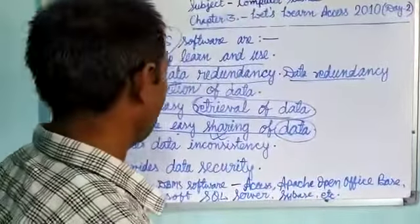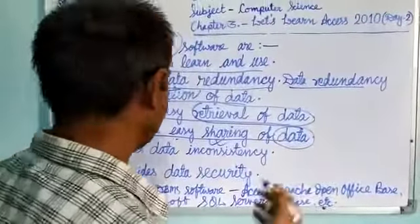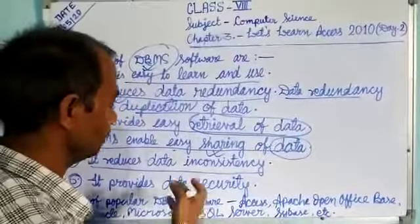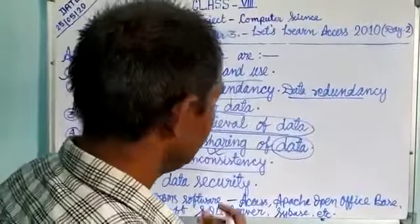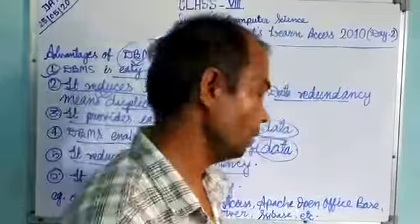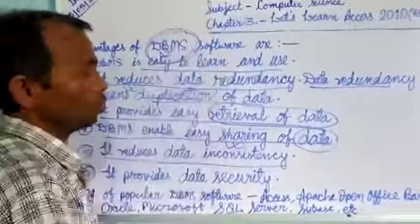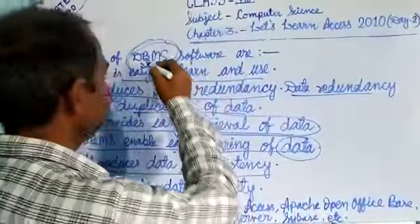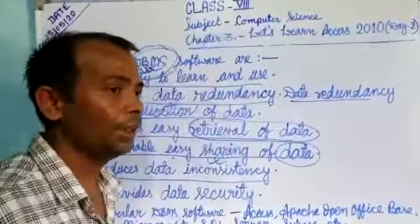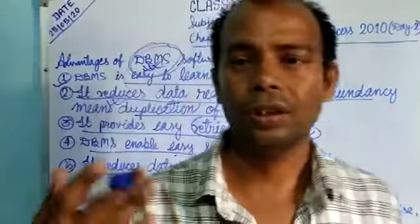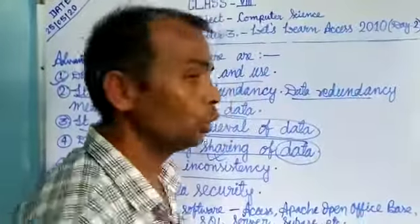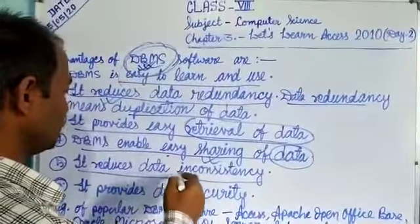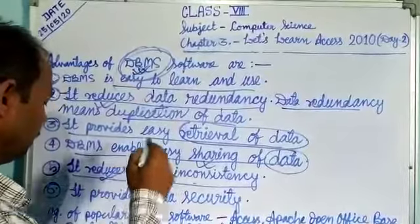DBMS reduces data inconsistency. Since we have one central file, any change we need to make is done in that central file, and every other file is automatically updated. So there is no need to change each and every file separately — that is how data inconsistency is reduced.